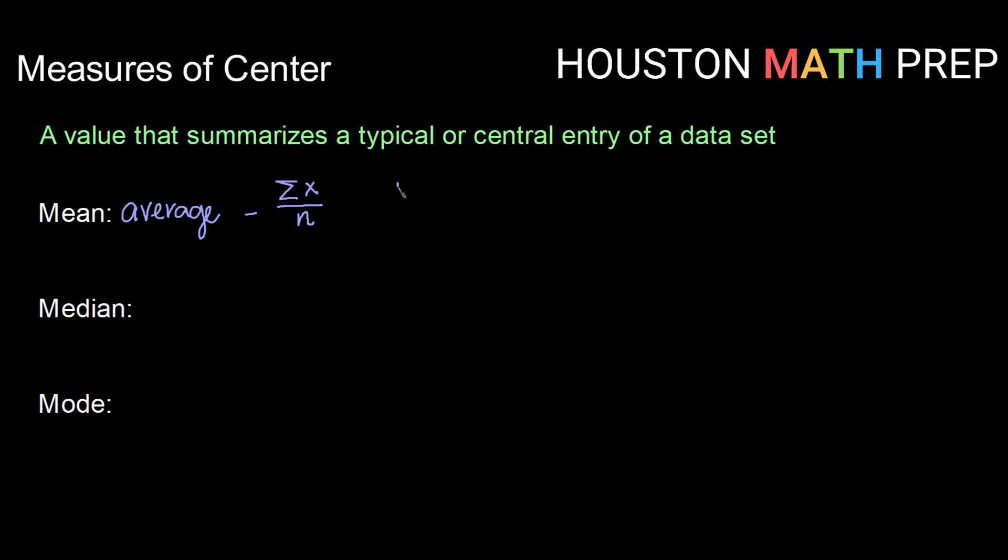Now if we're doing that for a population, then we call this mean or this average mu. So we use the Greek letter mu, kind of looks like a curly m or curly u, and that is our notation for a population mean.